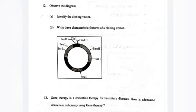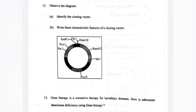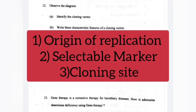Question 12. Observe the diagram. A. Identify the cloning vector. Answer: PBR322. B. Write three characteristic features of a cloning vector. Answer: 1. Origin of replication. 2. Selectable marker. 3. Cloning site.